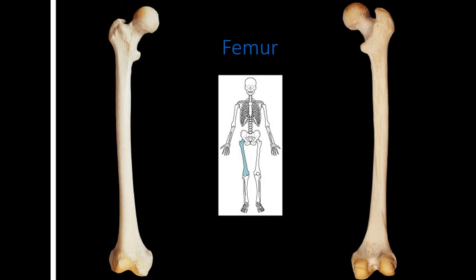The femur articulates with the acetabulum at the femoral head. Key structures on the femur include the head, the neck, the greater trochanter, and the lesser trochanter. From the posterior view, we can again identify the greater trochanter, lesser trochanter, neck, and head. Running along the posterior side of the femur on the lower portion is the linea aspera.